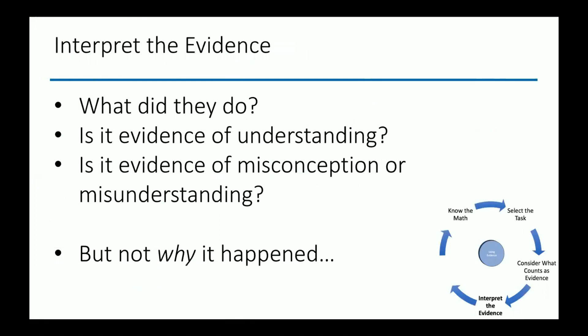We know the math, we selected the task, we've done it and considered what might count as evidence. Then students do the task, and as they're working, we are interpreting the evidence. What evidence do we have? What did they do? Is it evidence of understanding, misconception, or misunderstanding? Something I want to stress: in this moment, it's not necessarily about why it's happening — we're not always trying to fix it right in the moment. Sometimes as teachers we're rushing in to fix the problem, but sometimes we have to let it evolve so we can see fully why it's taking place.